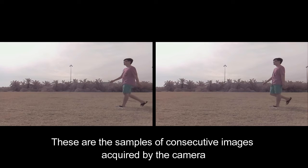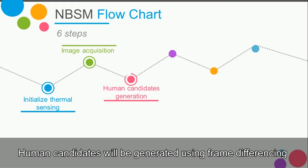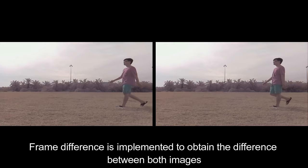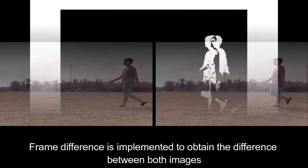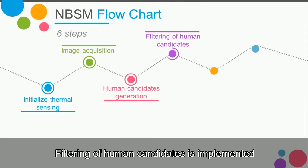These are the samples of consecutive images acquired by the camera. Next, human candidates will be generated using frame differencing. Frame difference is implemented to obtain the difference between both images. Then, filtering of human candidates is implemented.